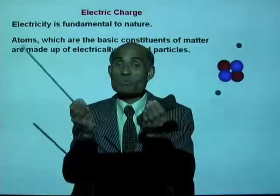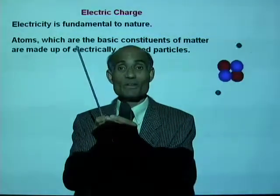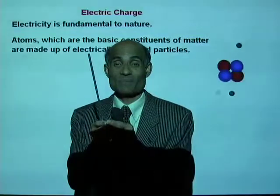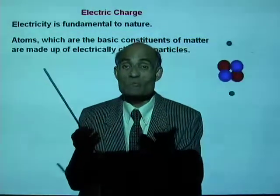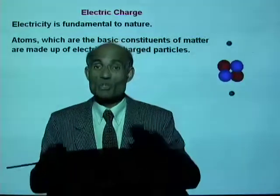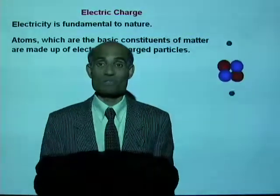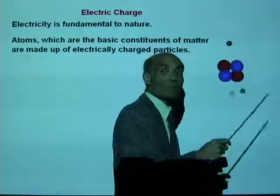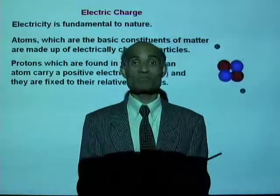If you keep a proton and an electron together, there will be no net charge. When there is no net charge, we say the object is neutral. An atom in the normal case is a neutral object because it contains equal amounts of positive and negative charges.